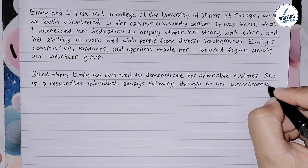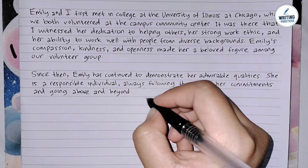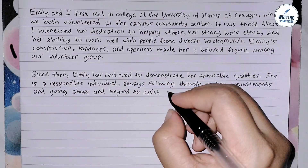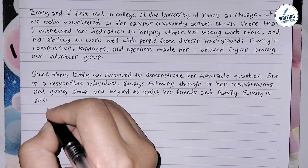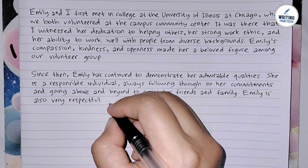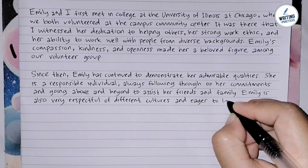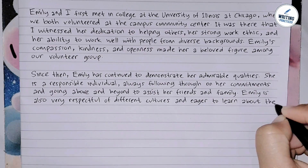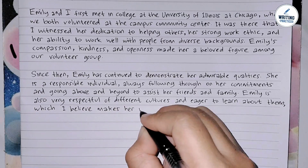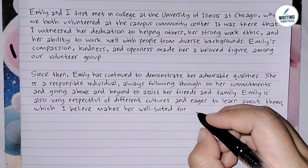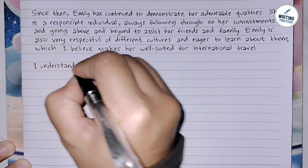Here is an example of how you write the third paragraph: 'Since then, Emily has continued to demonstrate her admirable qualities. She is a responsible individual, always following through on her commitments and going above and beyond to assist her friends and family. Emily is also very respectful of different cultures and eager to learn about them, which I believe makes her well suited for international travel.'